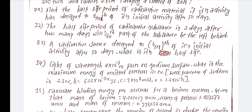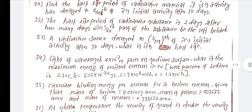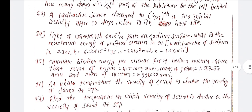Find the binding energy of the helium nucleus. Given: mass of helium nucleus is 4.001059 amu, mass of proton is 1.007277 amu, and mass of neutron is 0.9 into 10 to the... approximately 1.008032 amu.